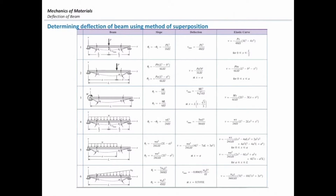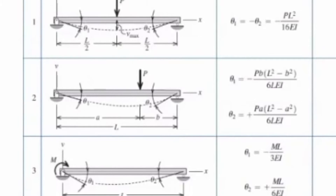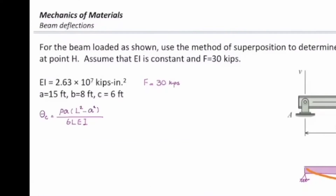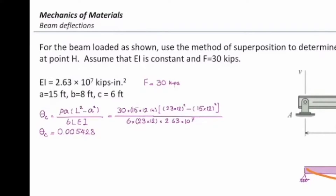The case I have requires theta2, since I need to determine deflection on the right side of the beam. Theta2 equals PA times (L squared minus A squared) divided by 6LEI. A in this case is 15 feet, which I multiply by 12 to convert to inches. B is 8 feet, also multiplied by 12. EI is given as 2.63 times 10 to the 7th. Plugging all these values into the equation gives a slope at that point equal to 0.005428 radians.